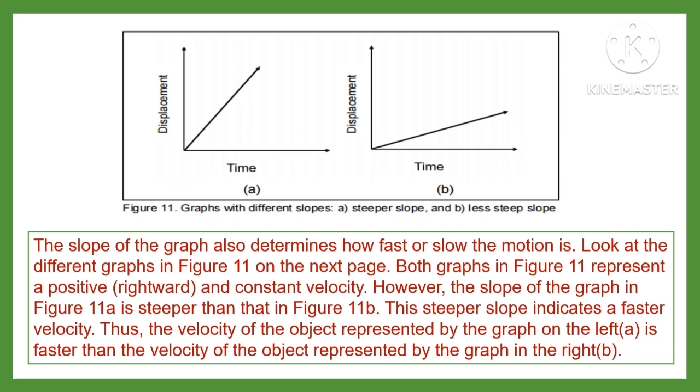Thus, the velocity of the object represented by the graph on the left, A, is faster than the velocity of the object represented by the graph on the right, B.